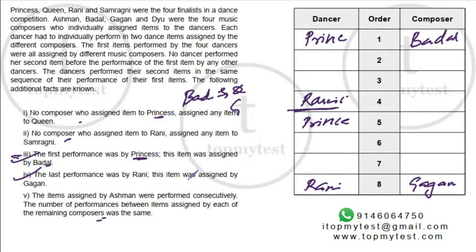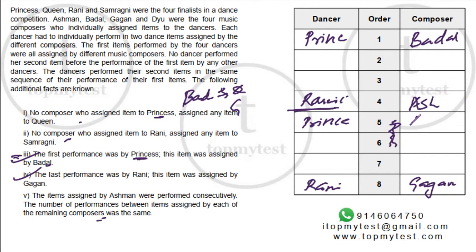Asman's performances were consecutive. You cannot have positions two-three or three-four because in the first four all composers must be different. It can be four-five, but not five-six because then in positions one through four only three composers would have composed, meaning someone repeated — which is not allowed. So Asman's performances must be at positions four and five. Also, the number of performances between items assigned by each of the remaining composers was the same.